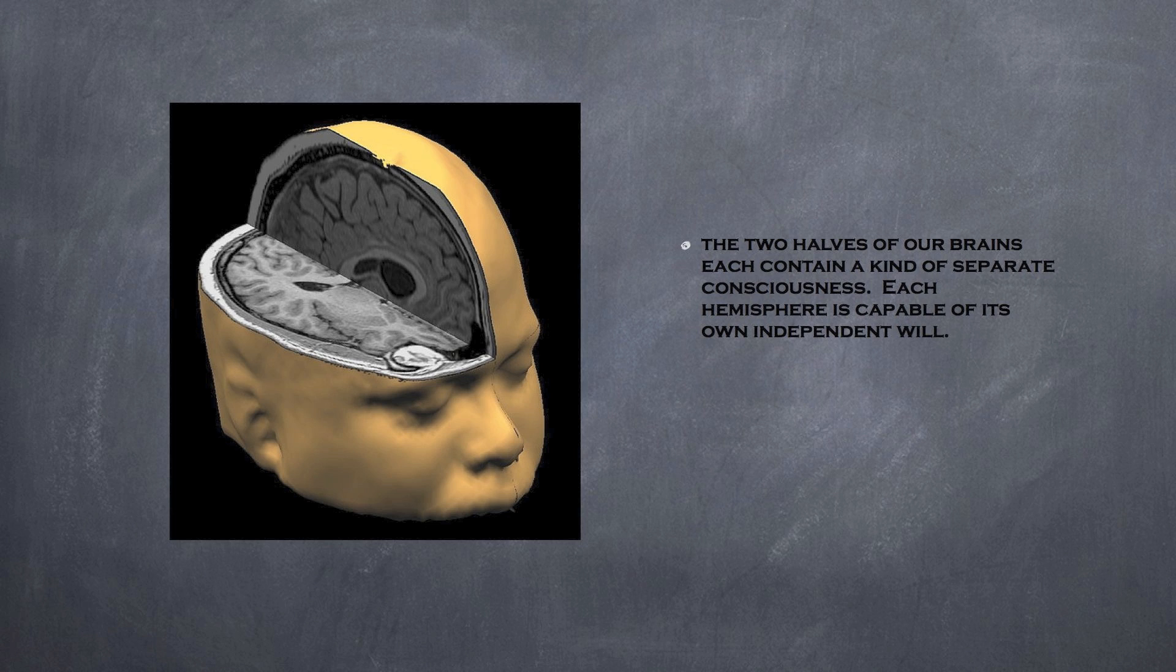Surgeons first decided to treat epilepsy by cutting the corpus callosum. After they had recovered, the patients appeared normal, but in psychological circles they became legends.